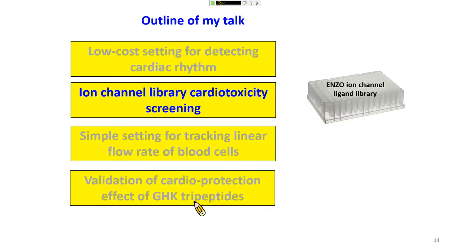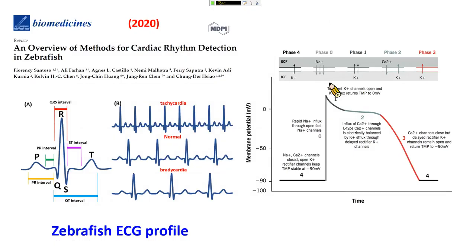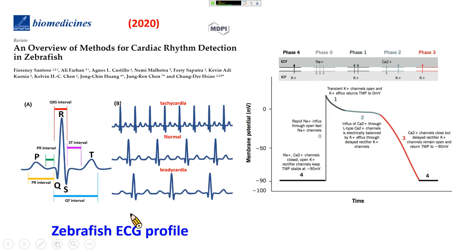After establishing this method, we screened a chemical library — specifically an ion channel library. The cardiac signal from adult ECG is very similar to the human ECG: the zebrafish ECG has four major signal peaks called PQRST, and each interval contains information about cardiac state.